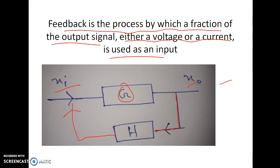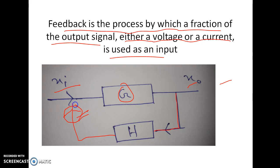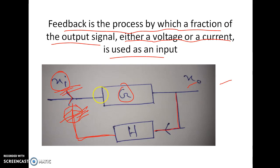Now, dependent on how you give the output of the H block to the input side — if you add the feedback signal with the input signal, that is called positive feedback. But if you subtract the feedback signal from the input signal, that is called negative feedback. If the output of H is added with zero degree or 360 degree phase shift with the input, that is positive feedback.